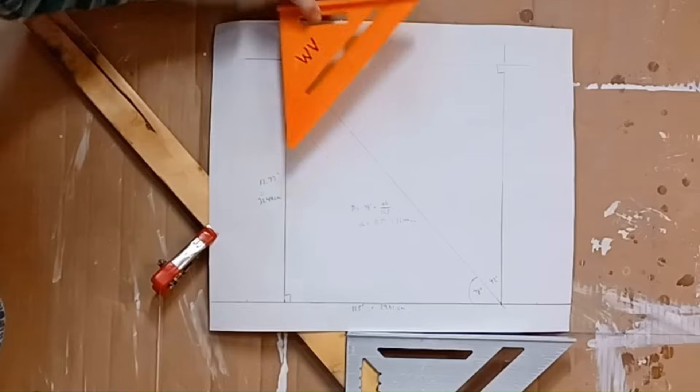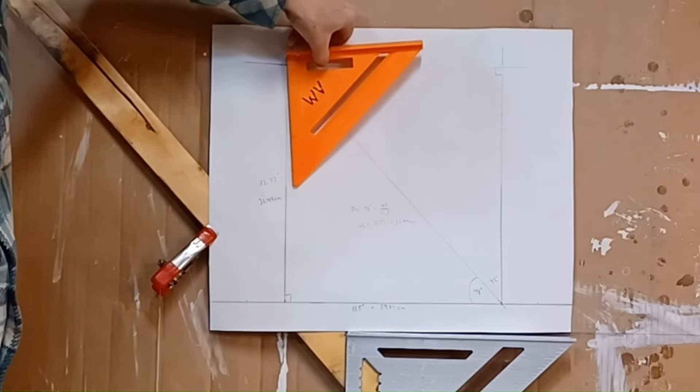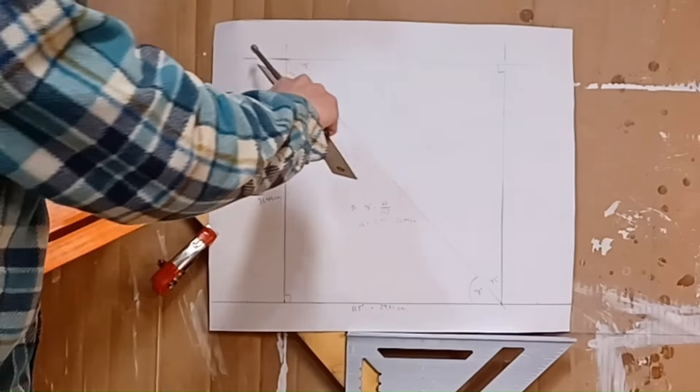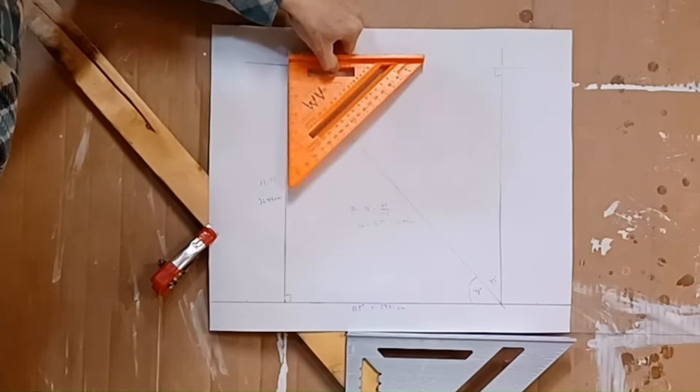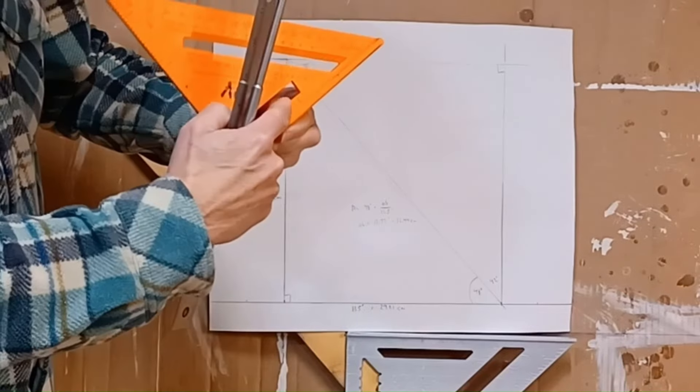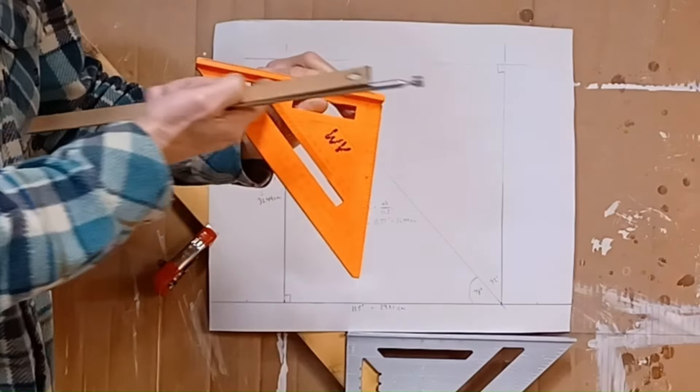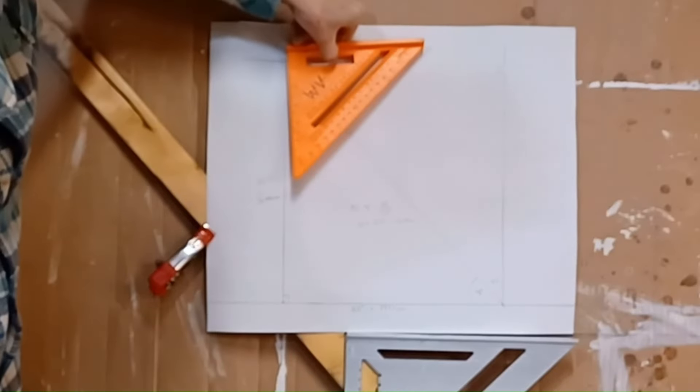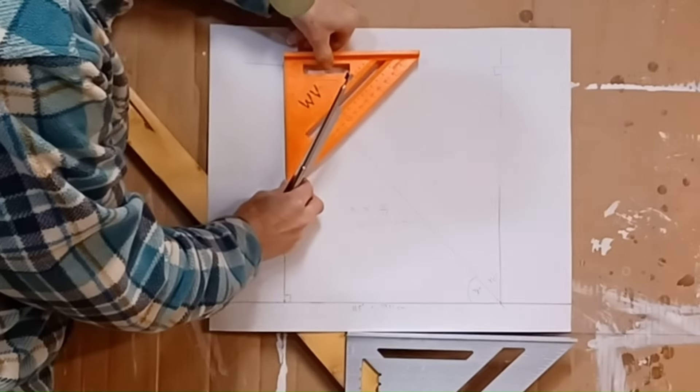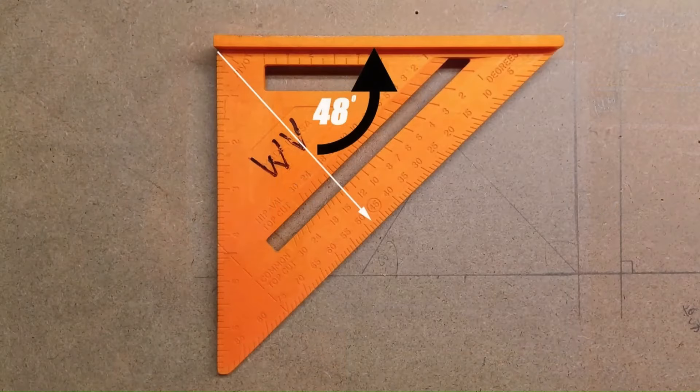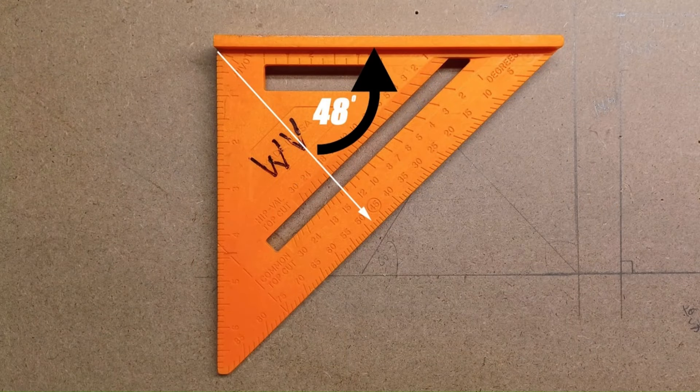We have our speed square triangle sitting up here and we line this edge up exactly with this line and the top edge up exactly with this line. Well, it's not the top edge. It's the inside top edge. Can't be this edge, has to be this one down here. Line that up exactly on here. And we read our angle, 48 degrees, right there.